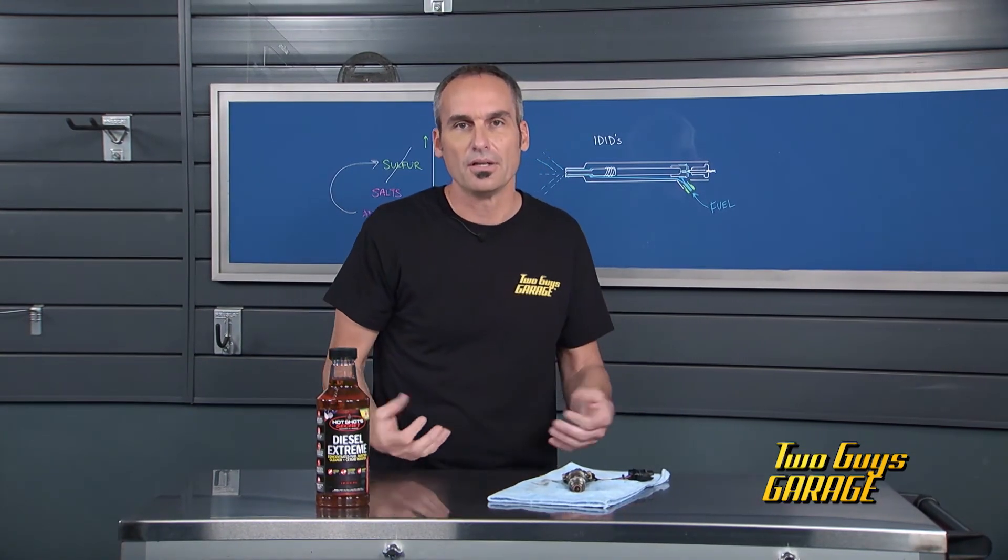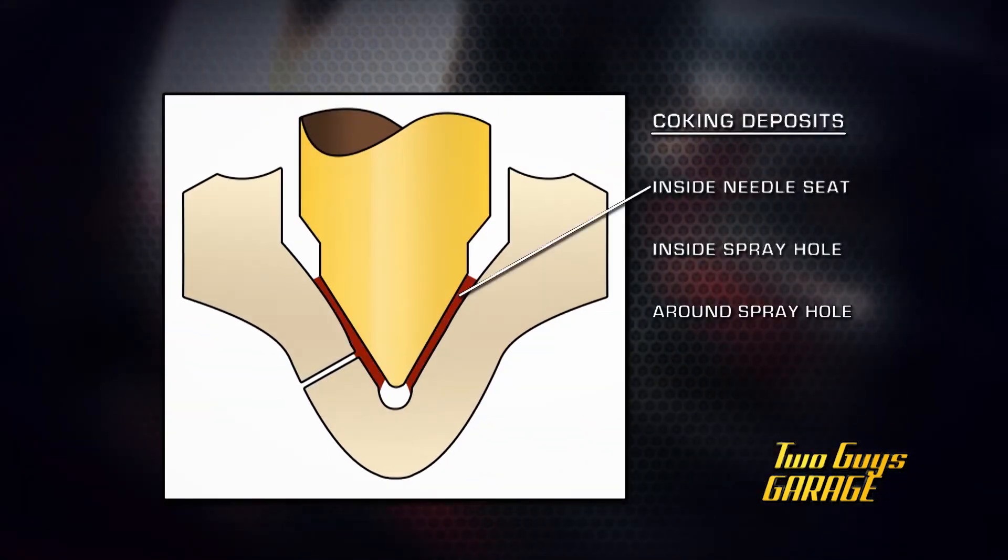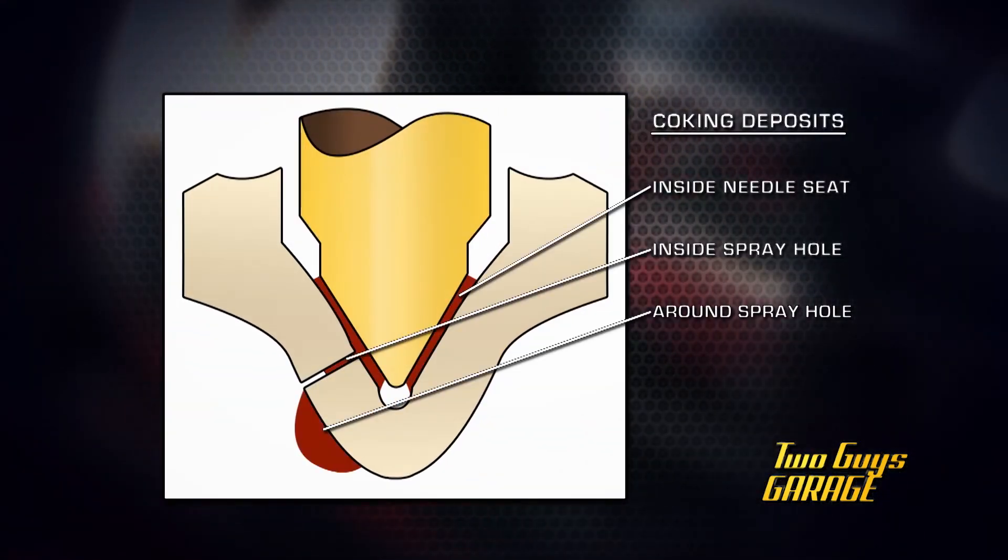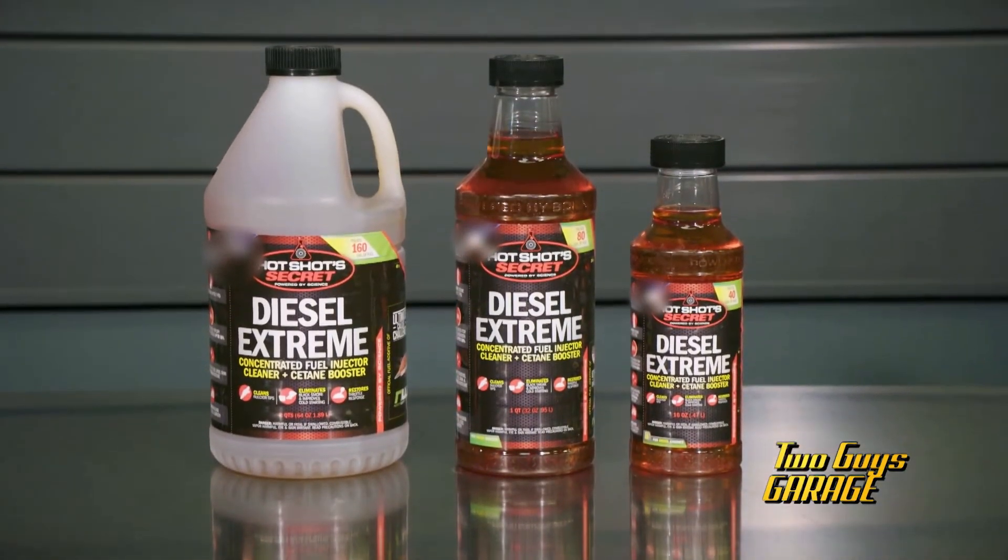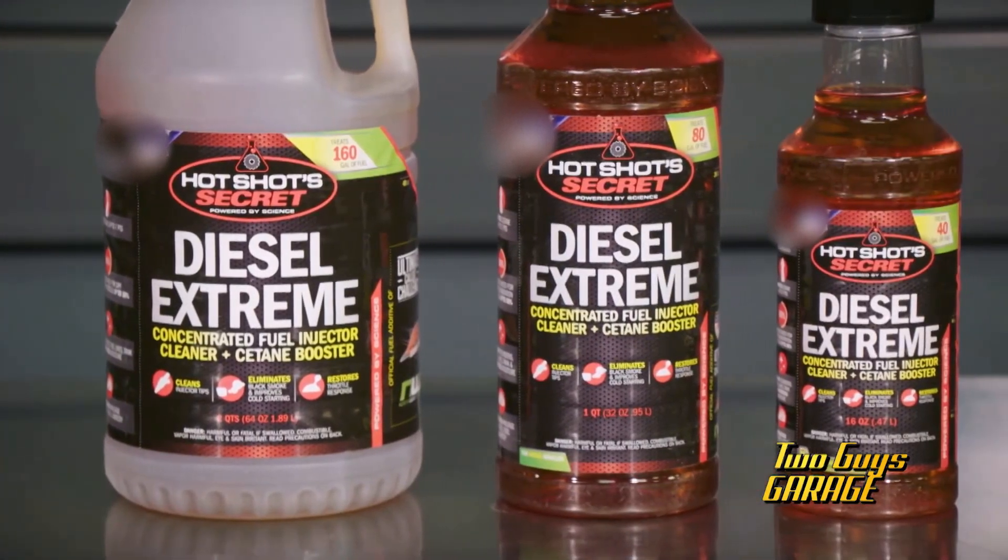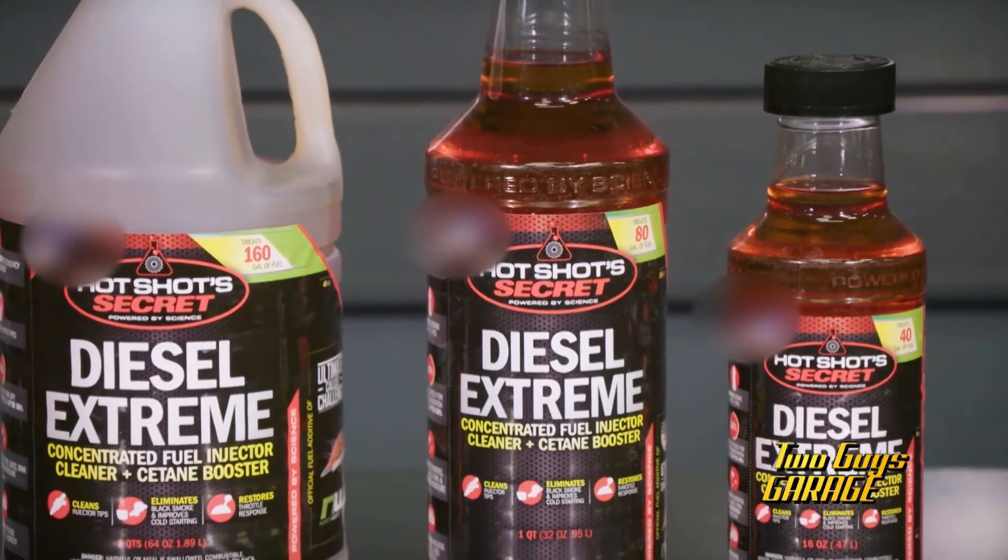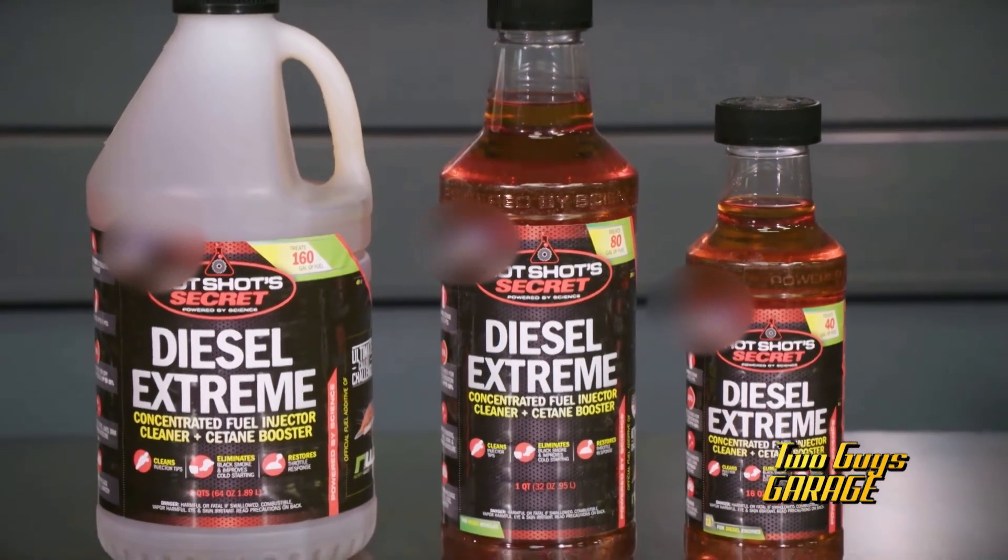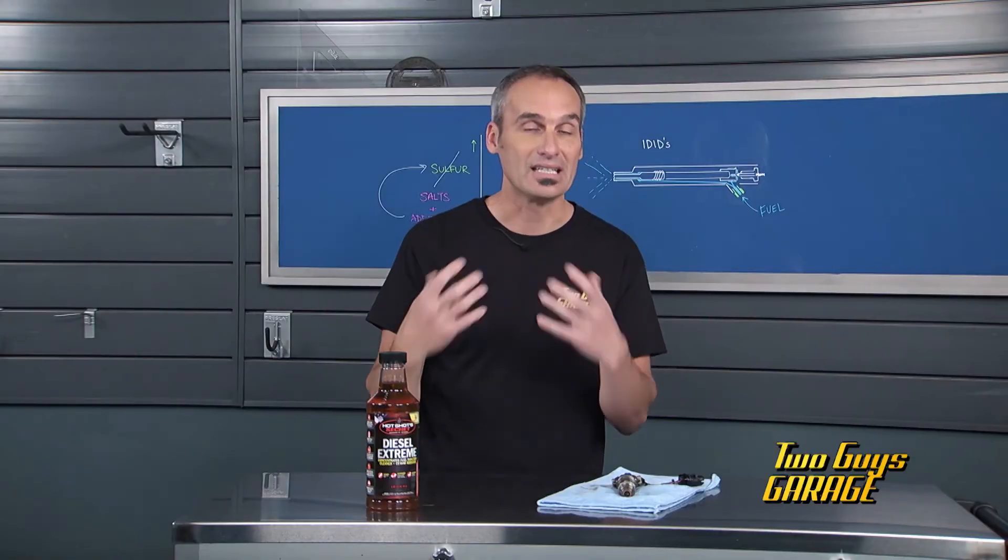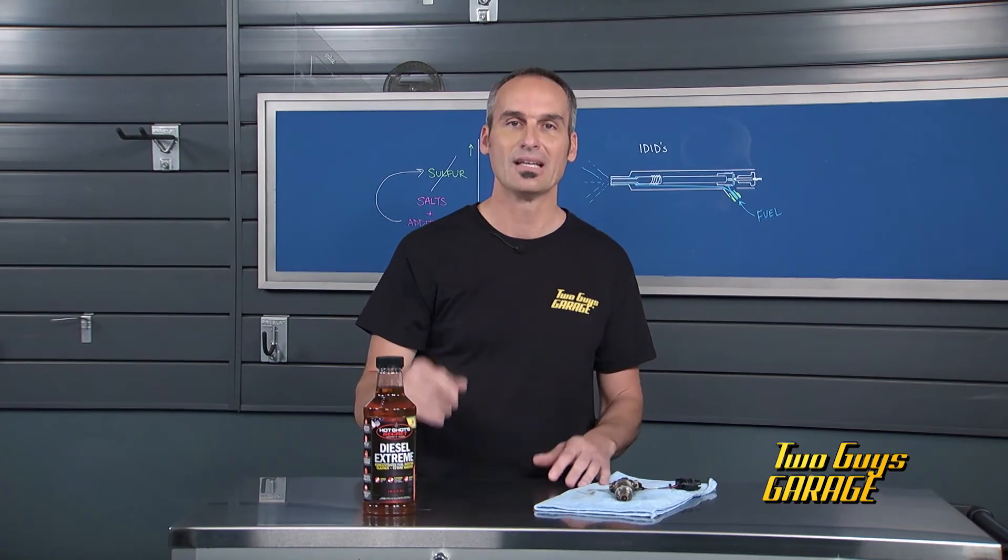So what do you do? You need to clean it with very specific ingredients to clean those IDIDs and the coking that can happen on the tip. We love Hot Shot Secret Diesel Xtreme. It's a six-in-one injector cleaner, cetane booster, lubricity improver, etc. And you only need to drop it in about every six months. Eight ounces goes 20 gallons. A great way to clean the deposits that are in there and keep your injectors cleaning for a long time. Save yourself a lot of money and keep that performance rocking.